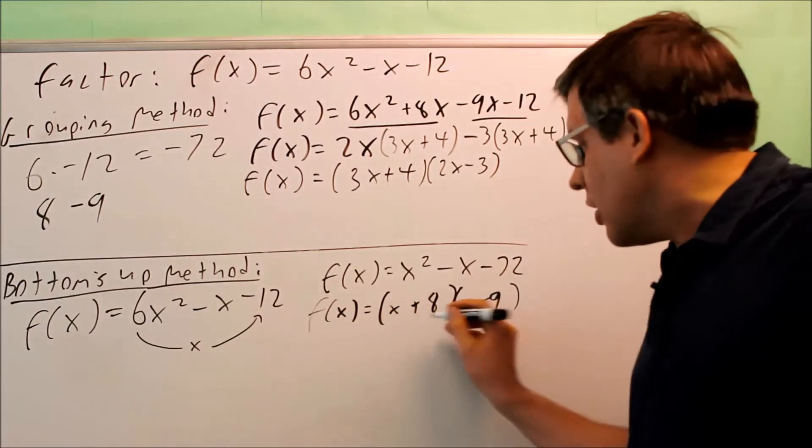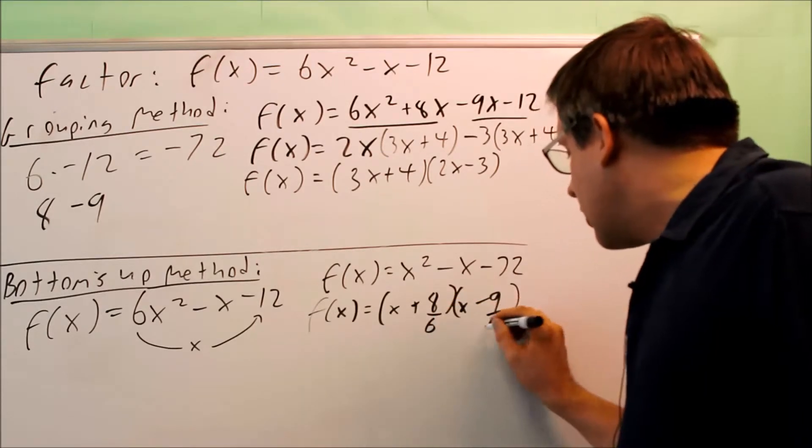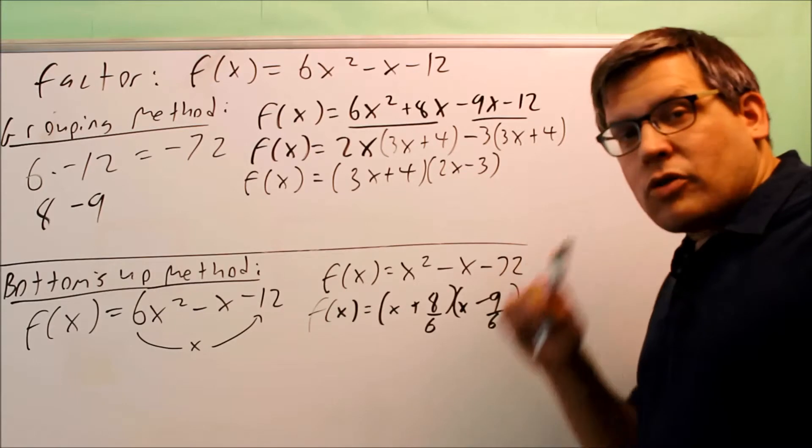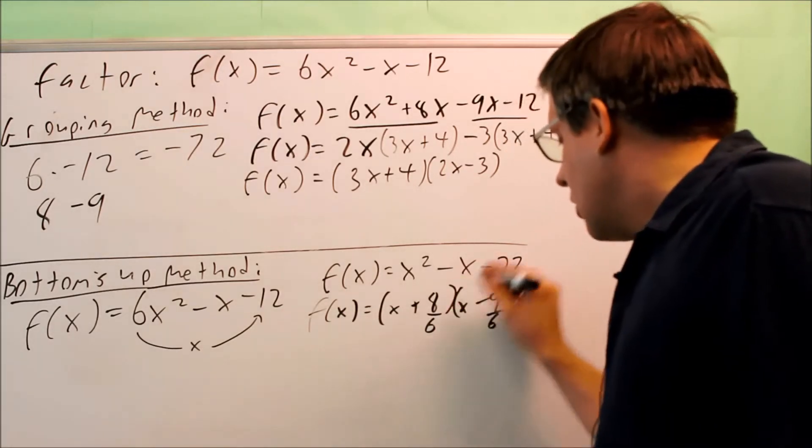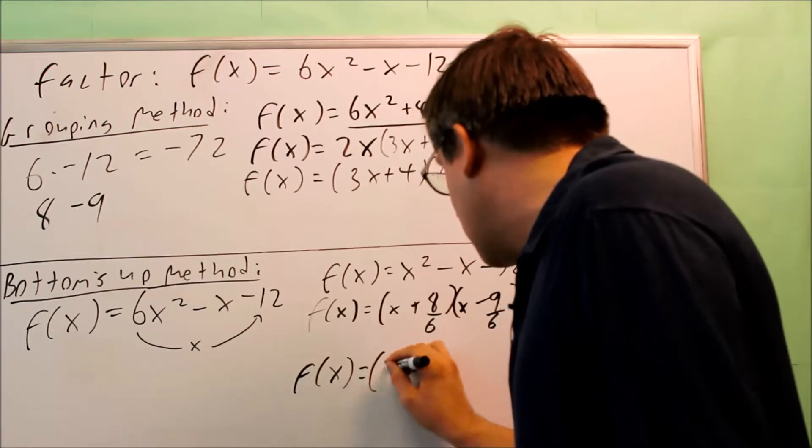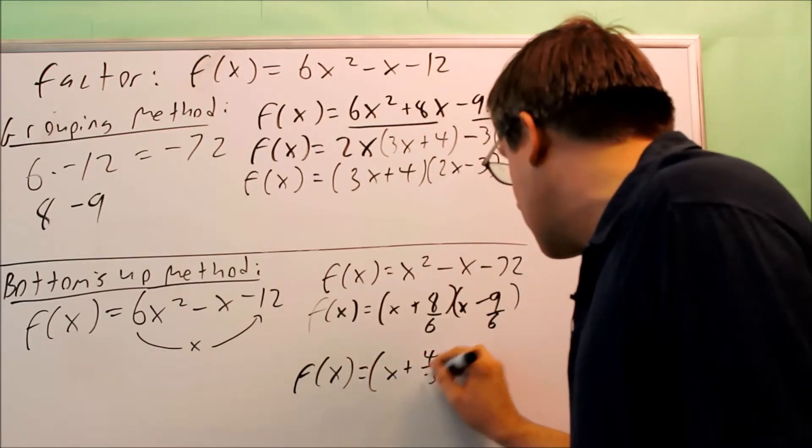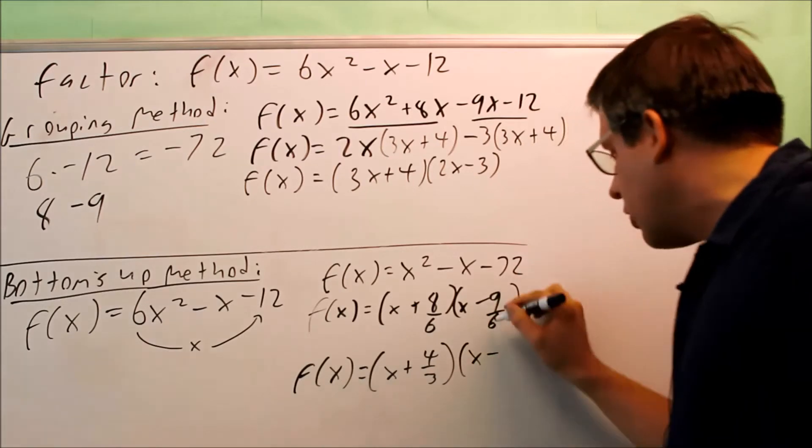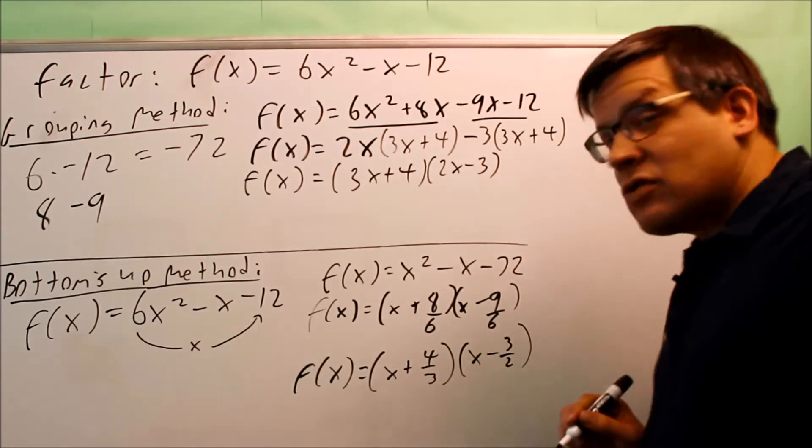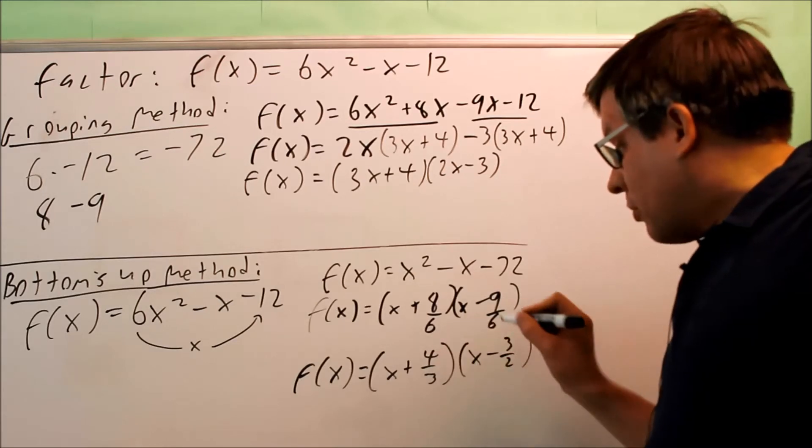The 6 that originally disappeared, you're going to write that underneath each of these factors right here. And if you're going to use this method, the most important thing is you have to make sure you reduce your fractions. So if we reduce the fractions, you get 4 thirds. And over here, we can take a 3 out of top and bottom there, and you get 3 halves.